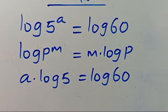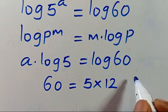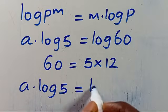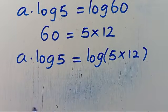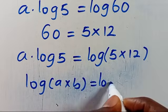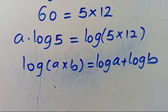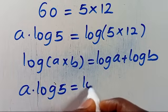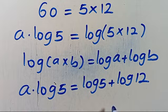This power A comes down to the base. Now note that we can write 60 as 5 times 12. So when we substitute, we get A multiplied by log 5 equals log of (5 times 12). Recall that log of A times B equals log A plus log B. So applying that, we get A multiplied by log 5 equals log 5 plus log 12.